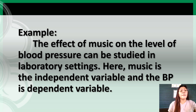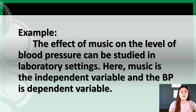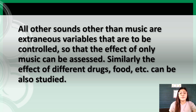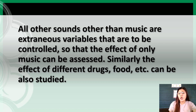These unwanted variables are called extraneous or intervening variables. Experiments are conducted under controlled conditions in order to control the effect of these extraneous variables. That is why experiments may be conducted by using two groups called the experimental group and the control group. All other sounds other than music are extraneous variables that are to be controlled so that the effect of only music can be assessed. Similarly, the effect of different drugs, foods, etc. can also be studied. The experiment may also be conducted on the same group under two conditions — experimental and controlled conditions.